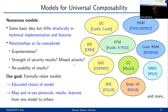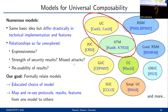Our goal is to initiate a line of research that fills this gap in the literature by formally relating models for universal composability. This not only allows for an educated choice of model in terms of the strength of security results one can obtain, but should also allow us, as far as possible, to map and then reuse protocols, security results, and features from one model to others. In our work, we start this line of research by relating the UC and IITM models.